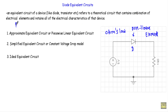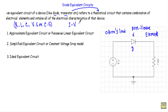For example, resistor, inductor, capacitor, voltage source or current source — and it retains all the electrical characteristics of that device. That means if I replace the diode or transistor with that theoretical circuit, that will preserve the original electrical characteristics of that device. For example, if I talk about IV characteristics, that will preserve the IV characteristics of that device.